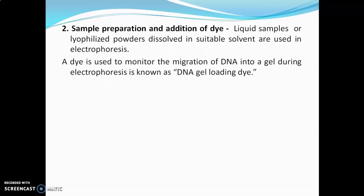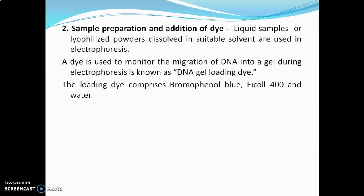This dye is also known as DNA gel loading dye. Since DNA, RNA, and proteins are transparent in nature, this dye is used to monitor their migration during electrophoresis. It is generally blue in color and consists of bromophenol blue. It also contains Ficoll-400, which is a dense material. Since DNA and RNA samples are very light in weight and may float out of the wells, Ficoll-400 is used to settle them. Glycerol can also be used instead of Ficoll.